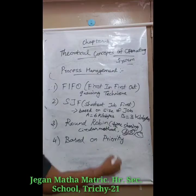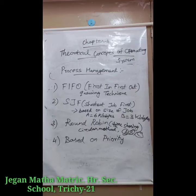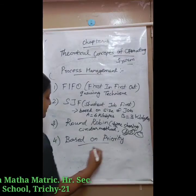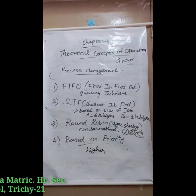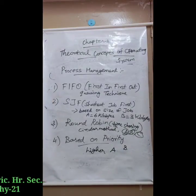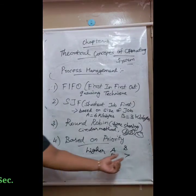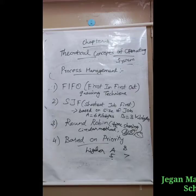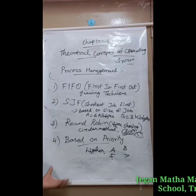The fourth one is based on Priority. Here, the given job is assigned based on priority. The job which has higher priority is more important than the other jobs. For example, take two jobs: job A with priority 5 and job B with priority 7. Job B is assigned to the processor first, after that job A is processed. This is the method based on priority.